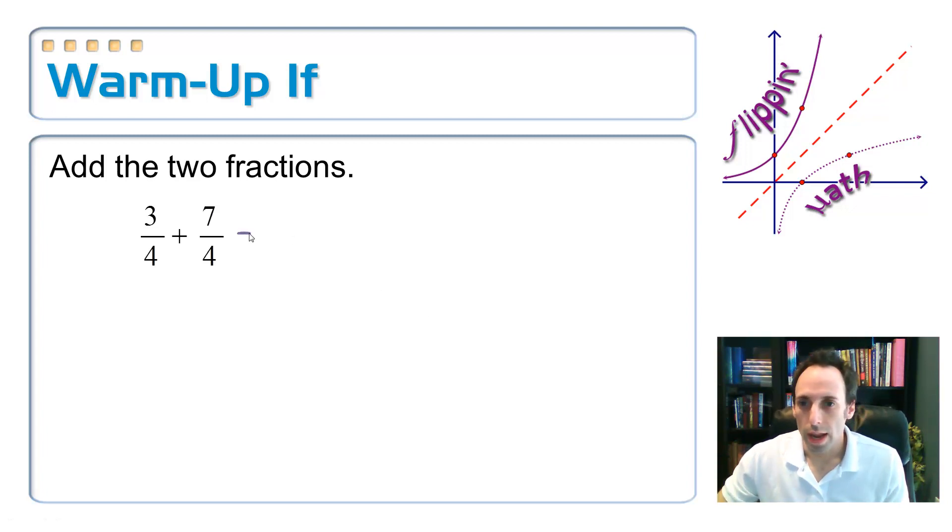So this should be, just add these up, 3x plus 7 is 10 over x plus 4. Keep the same denominator as four. And then if you can, you can reduce it. Well, both of these are divisible by two, so I'd have five over two. And that would be my answer.